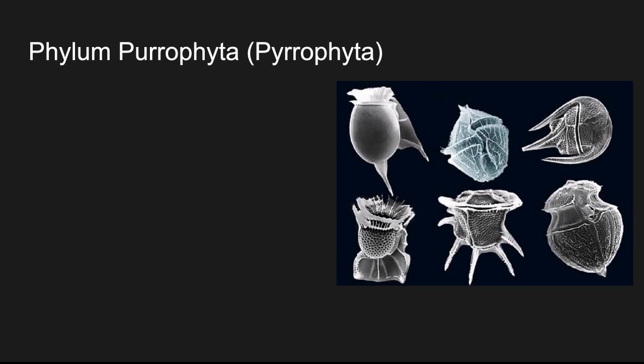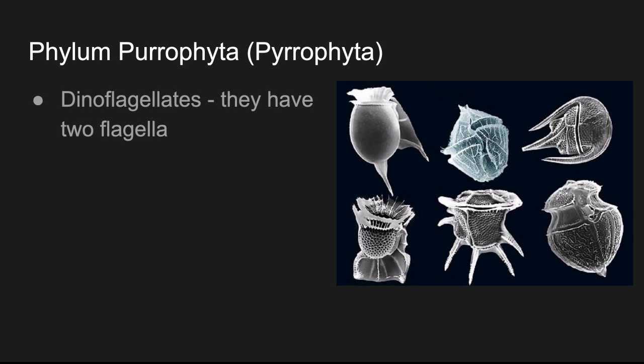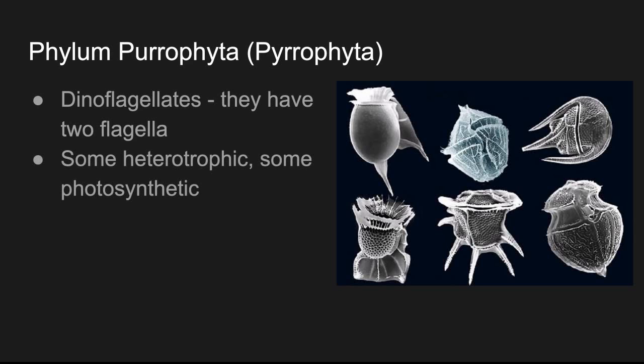We've got a different phylum now — this is phylum Perophyta. These have two flagella, so they are called dinoflagellates. Some of them are heterotrophic, some of them are photosynthetic. Remember, heterotrophic means they would not produce their own food — they would eat something. There's a variety within this phylum: you've got some that eat, some that photosynthesize.